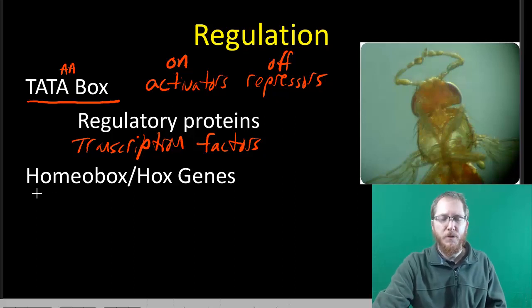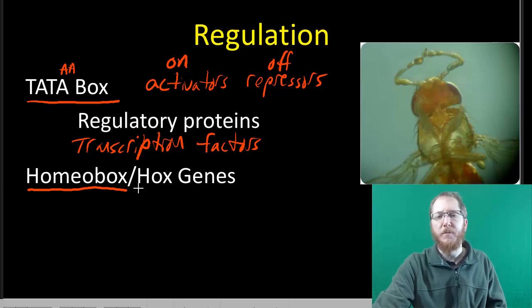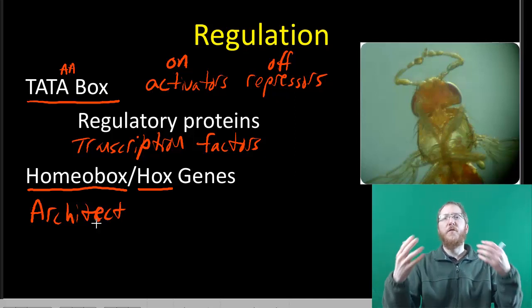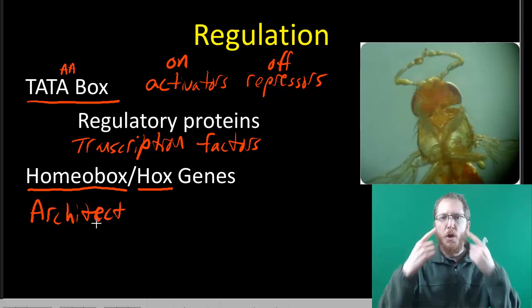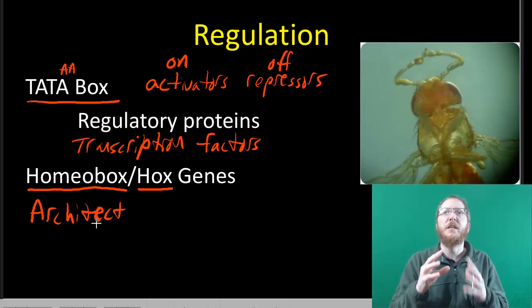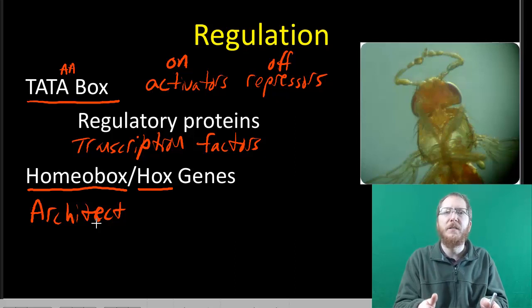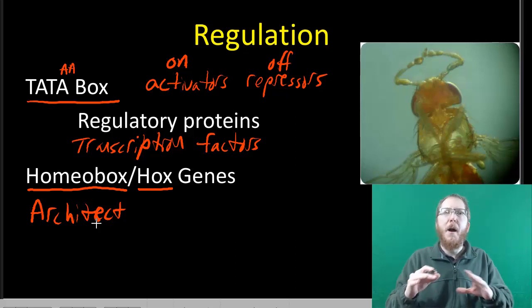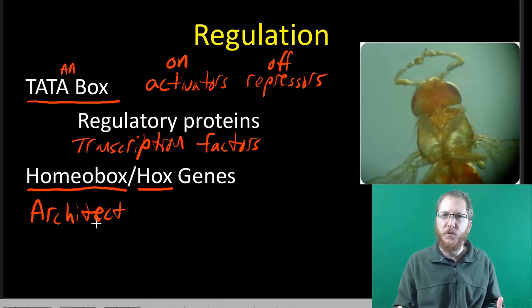In animals, there are genes called homeobox genes, also called Hox genes or architect genes. These don't code for the type of eye you have, for example. What they do during development is trigger gene expression that determines where to place structures and how many of them to make — they're really about placement and number.